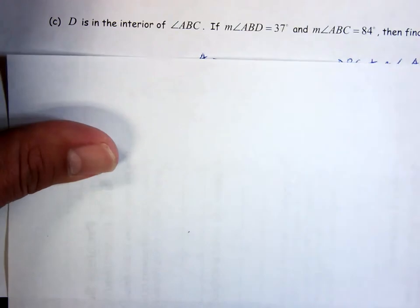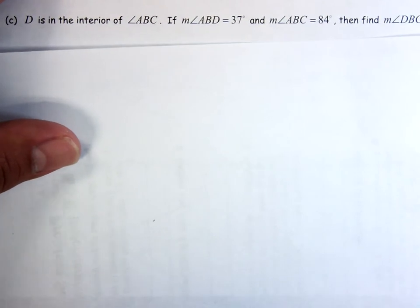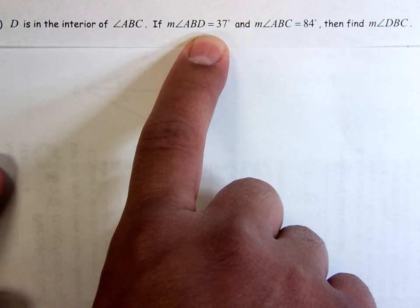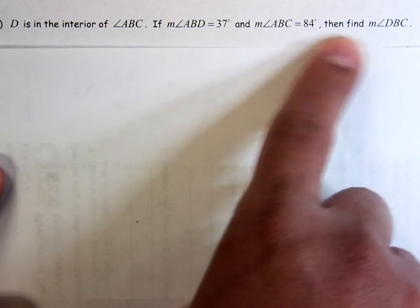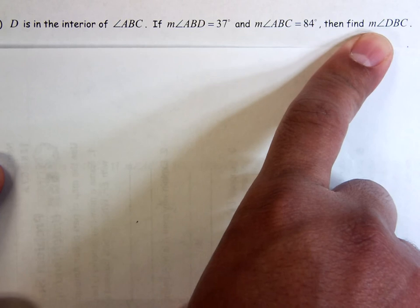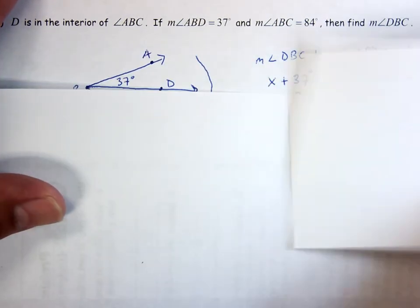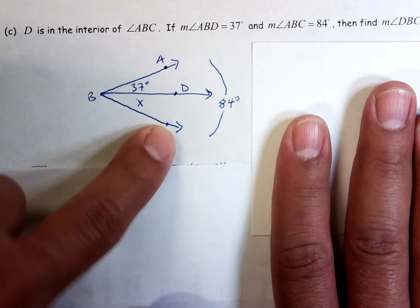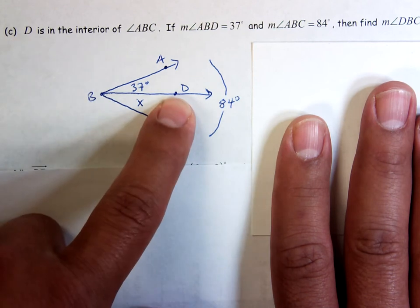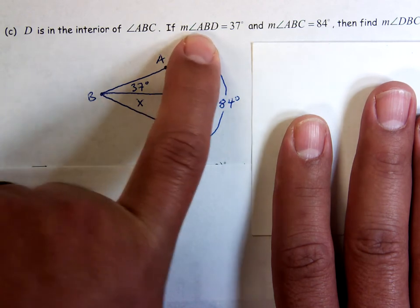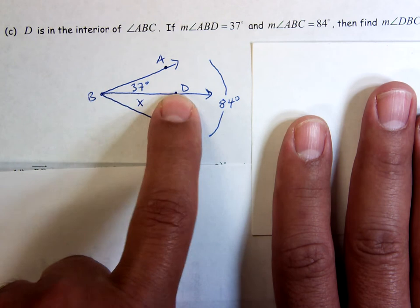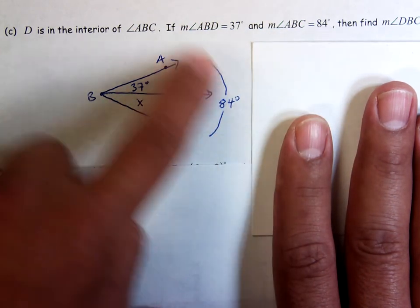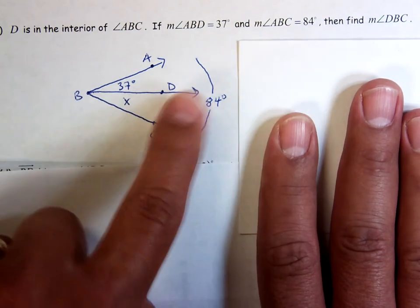This is more like a problem you'll see on a test than what we're going to be doing in class. D is in the interior of angle ABC. If the measure of angle ABD is 37 degrees and the measure of angle ABC is 84 degrees, then find the measure of angle DBC. Now when it's just words, sometimes it can be hard to picture exactly what they're saying. So I always draw pictures. So here's my picture. Let's make sure it matches up. D is in the interior of angle ABC, so angle ABC is the big angle and D is in the interior. There's D on the inside. Then it says the measure of angle ABD is 37 degrees. So ABD, put my fingers, this angle, that's 37 degrees. And the measure of angle ABC, the big angle, is 84 degrees.